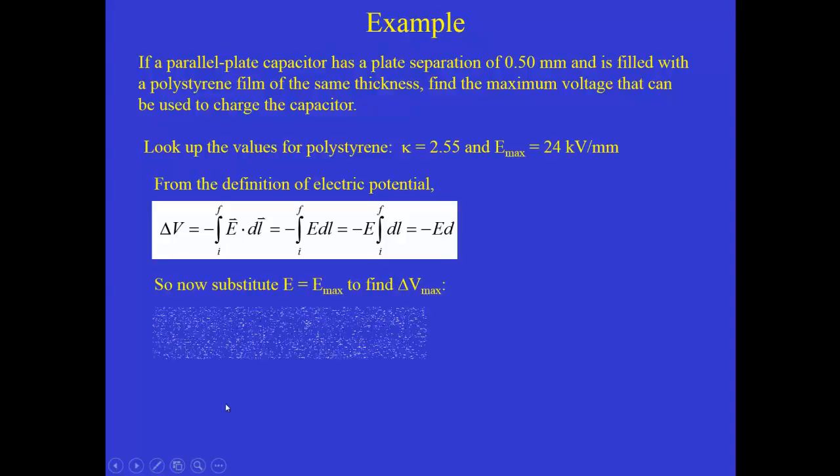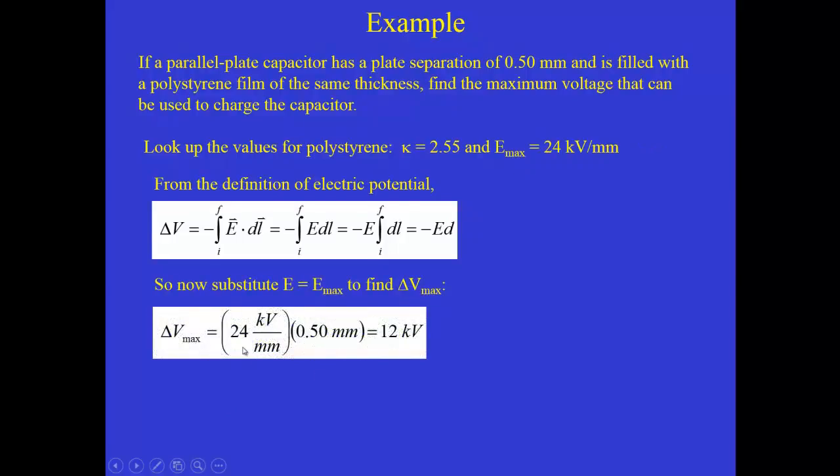So if we sub in E equals E max, we can solve for delta V max. We know what D is. And so 24 kilovolts per millimeter times half a millimeter is 12 kilovolts. So according to the properties of polystyrene, for this plate separation, the maximum voltage that we could use to charge it up would be 12 kilovolts.